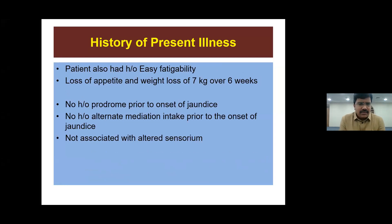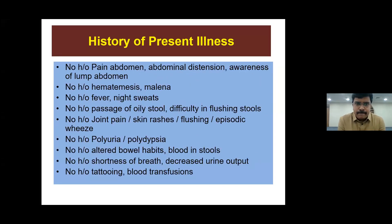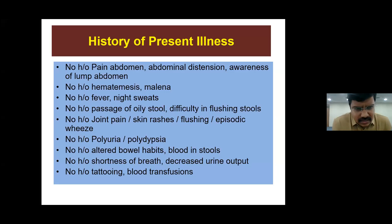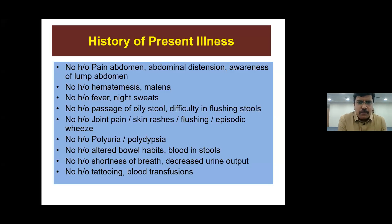This jaundice is associated with high-colored urine, pale-colored stools, and generalized itching. The itching is more towards the evening hours, rated severity grade two to three, interfering with daily activities and sleep, predominantly over extremities and back. Patient also had easy fatigability, loss of appetite, and weight loss of seven kilograms over six weeks. There is no history of prodrome prior to onset of jaundice and no history of alternate medication intake. No altered sensorium, no pain abdomen, no abdominal distension, no hematemesis or melena.